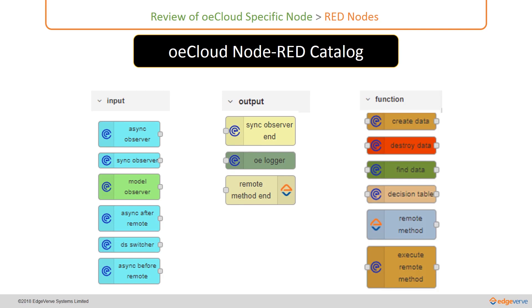The third category of OECloud node-red nodes includes function kind of nodes, which includes instance level operations for creating of data, destroying of data, and finding of data.